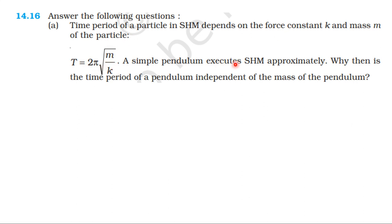A simple pendulum executes simple harmonic motion approximately. Why then is the time period of a pendulum independent of the mass of the pendulum? The time period of the pendulum is equal to 2π root of mass by force constant, so time period depends on mass. Why is the time period of the pendulum independent of the mass?